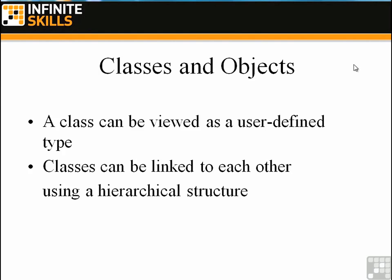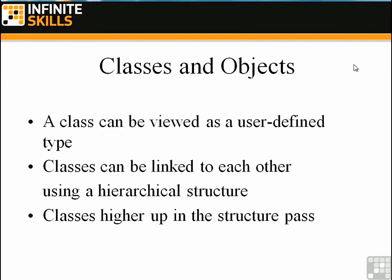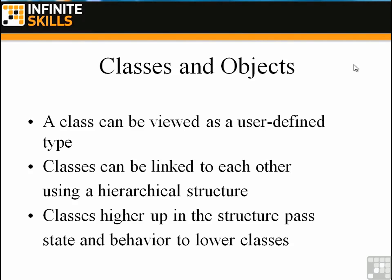Classes can be linked together using a hierarchical structure. This is already well-known in the real world, and it works in programming as well. An example might be, we have an overall class called vehicle. Vehicles can be broken down into cars, bicycles, lawnmowers, golf carts, things like that — that's what I mean by a hierarchical structure. Classes higher up in the structure pass state and behavior to lower classes. So when I define a vehicle, it has certain characteristics that can then be passed down to other types of vehicles, such as cars or a train.